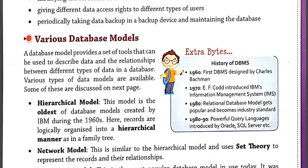Let's take an example of this database model. One department can have many courses, many professors, and of course many students. In this example, department is the parent, and the courses, professors and students are the children of this parent.